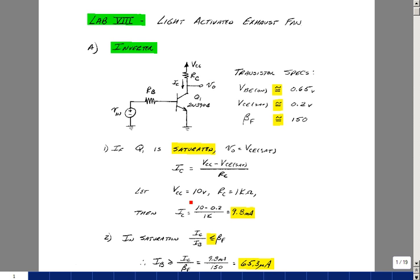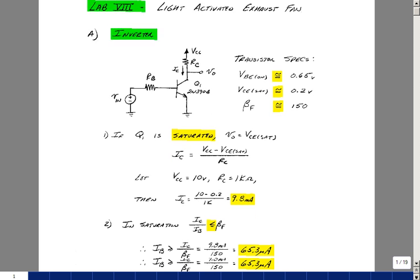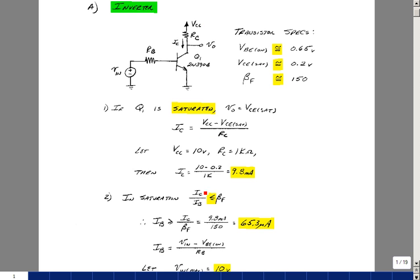If we had a 10 volt power supply and a 1k value for R sub c, we're looking at a collector current around 9.8 milliamps. To keep the collector to base current ratio less than beta-f, which is 150 in this case...